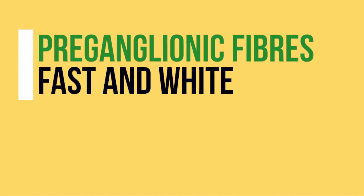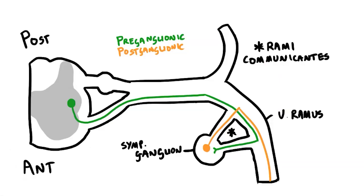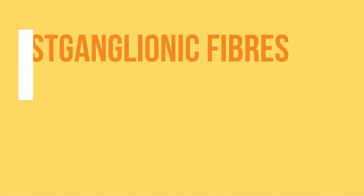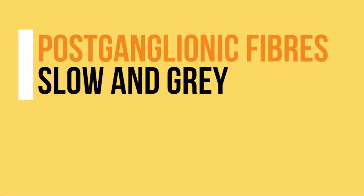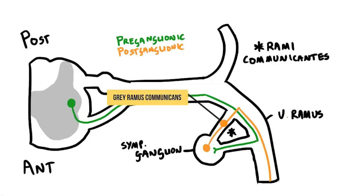Preganglionic fibres are covered in myelin. This fatty sheath improves the speed of transmission and makes the nerves appear white. Because of this, we call the ramus that they travel along the white ramus communicants. Postganglionic fibres don't have myelin, making them slower and greyer. These travel back to the ventral ramus along the grey ramus communicants.